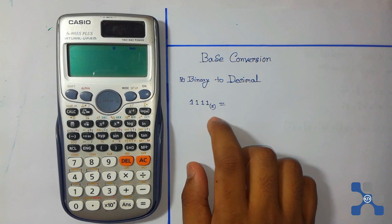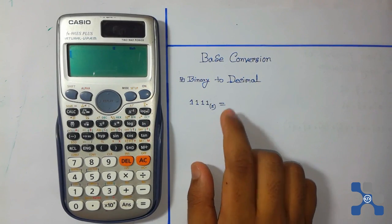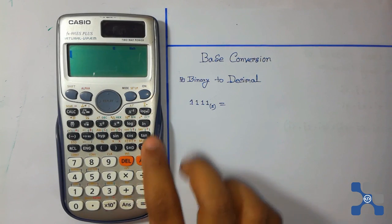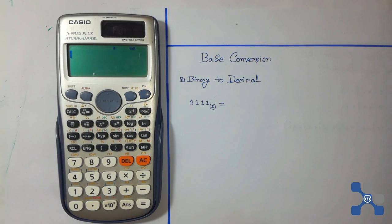This is the number written in binary numbering system. We convert it to decimal number system on this calculator, and then press